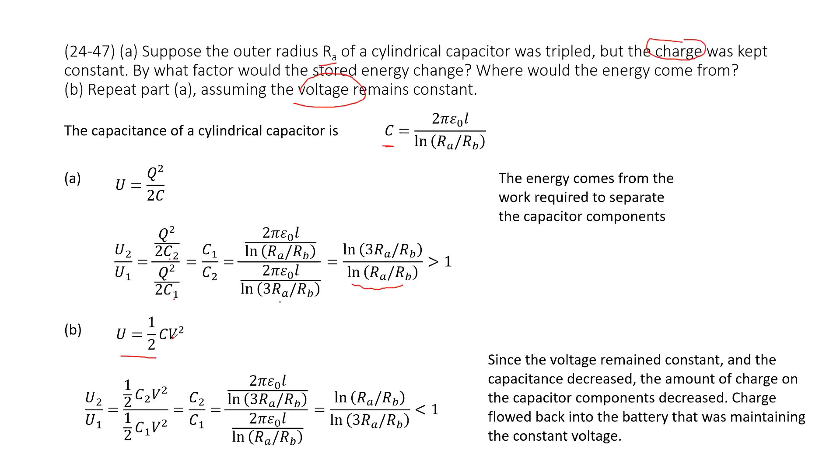Now same thing. We use final electric energy over initial electric energy. So one half c2 v squared over one half c1 v squared. One half and v can be cancelled. So the ratio becomes c2 over c1.